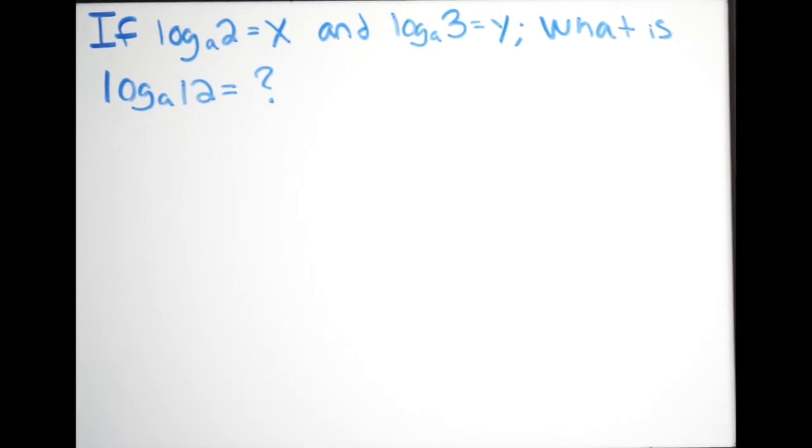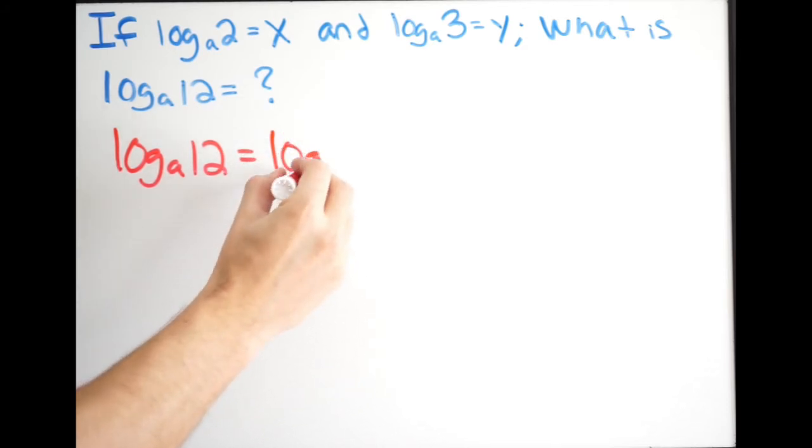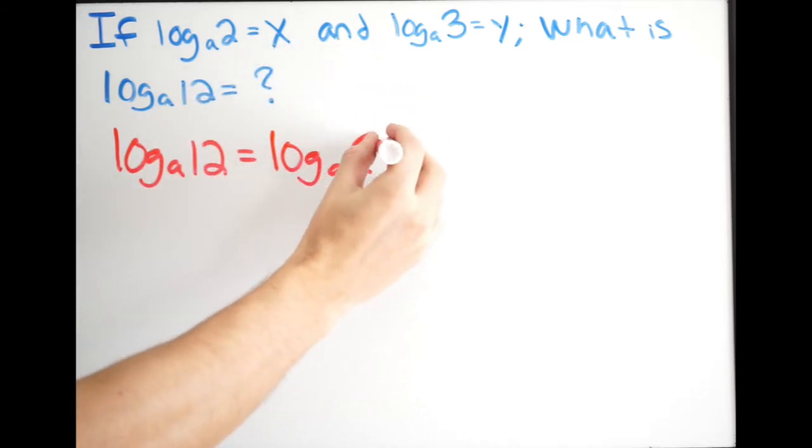So in this particular problem we have to use both our knowledge of logs and their properties. In order to do this problem I'm simply just going to start by writing log base a of 12. I'm going to put equal to. And I want to think about how I can rewrite what I'm already given, log base a of 2 and log base a of 3.